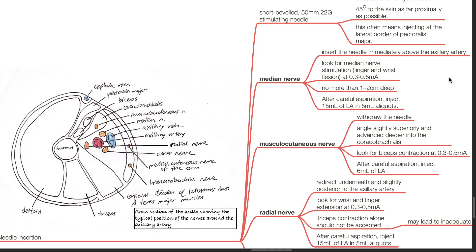To block the musculocutaneous nerve, withdraw the needle, angle slightly superiorly, and advance deeper into the coracobrachialis. Look for bicep contraction at 0.3 to 0.5 milliamps. After careful aspiration, inject 6 mL of local anesthetic.